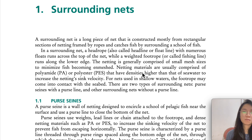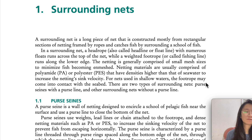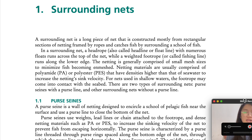A surrounding net is a long piece of net that is constructed mostly from rectangular sections of netting framed by ropes, and catches fish by surrounding a school of fish. A head rope, also called headline or float line, with numerous floats runs across the top of the net, while a weighted foot rope, or lead line, runs along the lower edge.